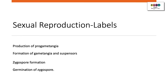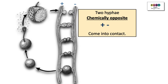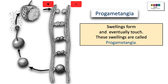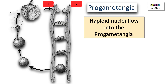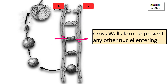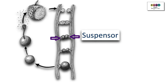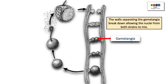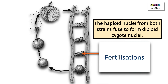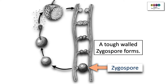For sexual reproduction, the important labels are: production of progametangia, formation of gametangia and suspensors, zygospore formation, and germination of the zygospore. Two chemically opposite hyphae — a plus strain and a minus strain — come into contact and develop swellings called progametangia. Haploid nuclei flow in but cannot mix yet. Cross walls form to prevent other nuclei entering, creating gametangia supported by suspensor cells. The wall between the gametangia breaks down, allowing nuclei from both strains to mix, and haploid nuclei fuse to form diploid zygote nuclei, which are encased in a tough-walled zygospore.